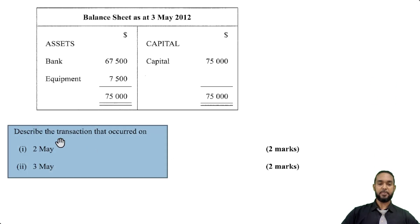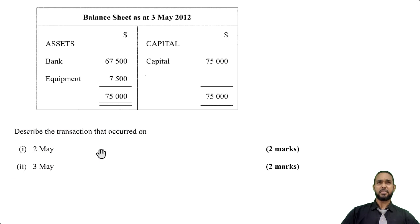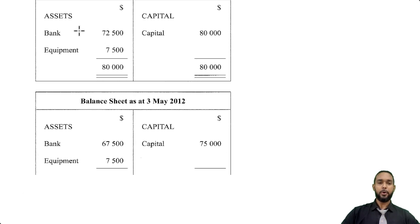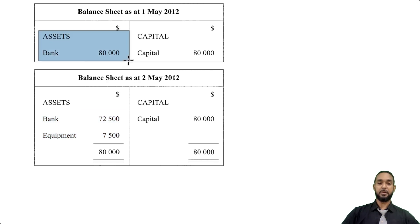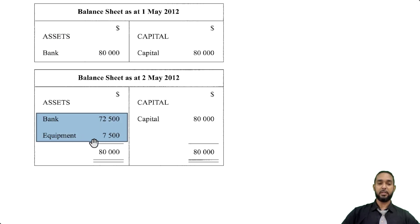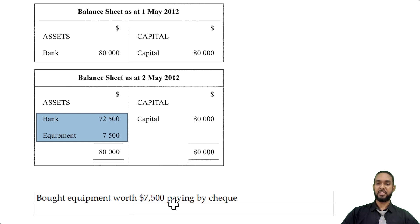The question says: describe the transaction that occurred on the 2nd of May and on the 3rd of May. A transaction is, of course, where there's a change in value — usually described as an exchange of value. On the 2nd of May, the bank account decreased and equipment increased relative to the balance sheet on the 1st of May, where we started with $80,000 in the bank. So what happened here was simple: we used money from the bank account to buy equipment. As I have phrased it here, we bought equipment for $7,500 paying by check. Simple and straightforward.